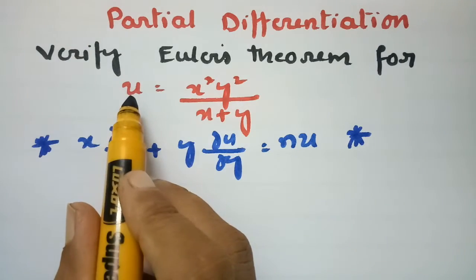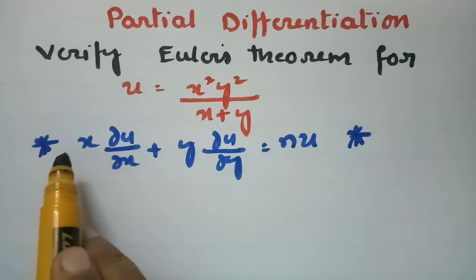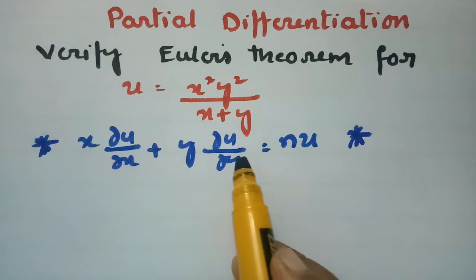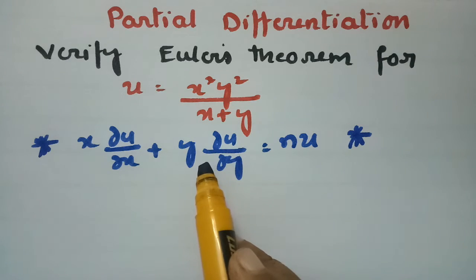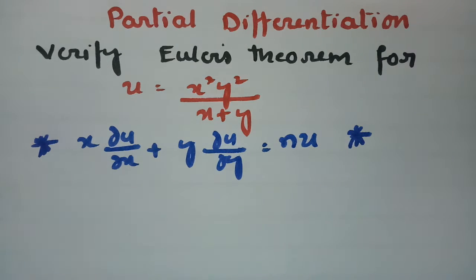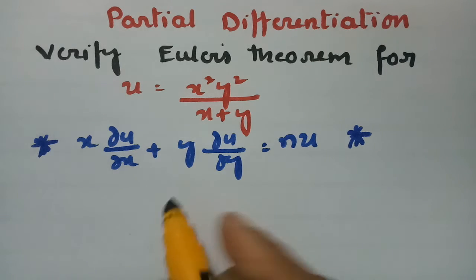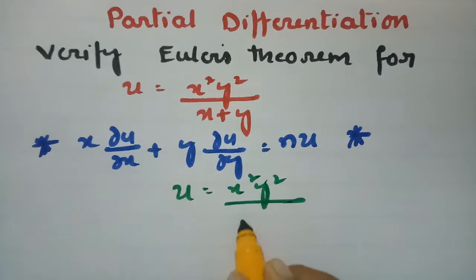In order to verify, we have u here and we have to make a derivative with respect to x, multiply with x, and again make a derivative with respect to y and multiply with y, then add up these two. So u is equal to x square y square by x plus y.